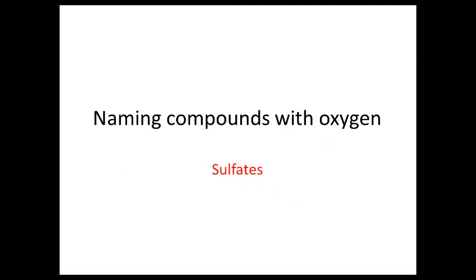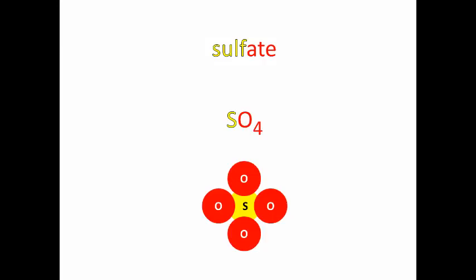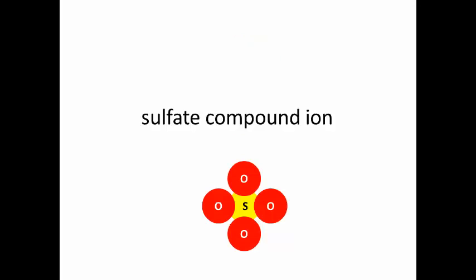Now for another family which involves oxygen, the sulfates. Whenever you hear the word sulfate, you know that there's SO4 inside that chemical. We call SO4 a compound ion. S bonded to four O's forms like a unit and it acts like one thing in a way. And we call that one unit, sulfate.